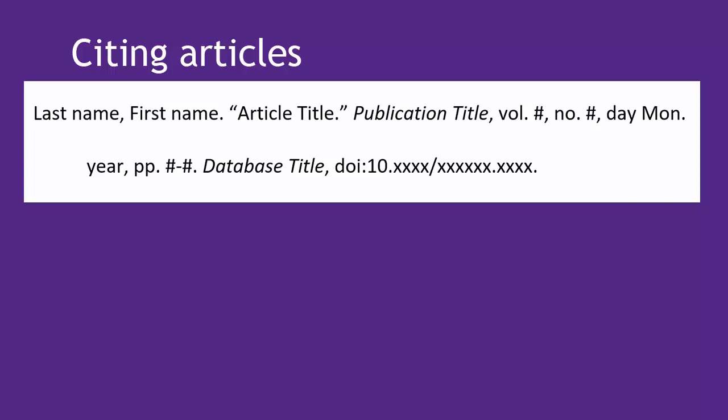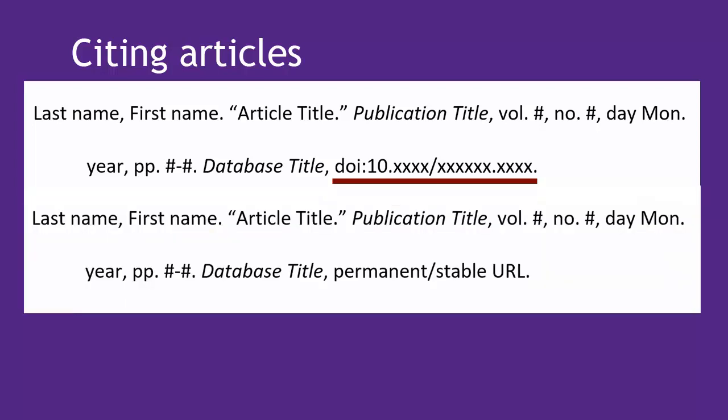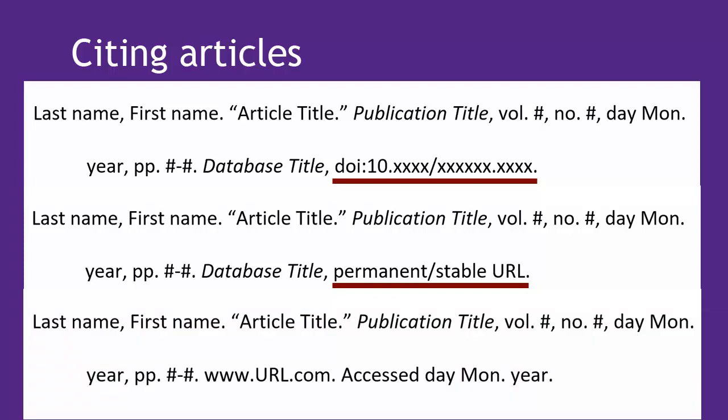For the access information, include the database title if you accessed it from a database, then include either the DOI — which stands for Digital Object Identifier and is the preferred choice — if you don't have a DOI, then a permanent or stable URL, or as a last resort, whatever URL is provided plus the access day, month, and year.